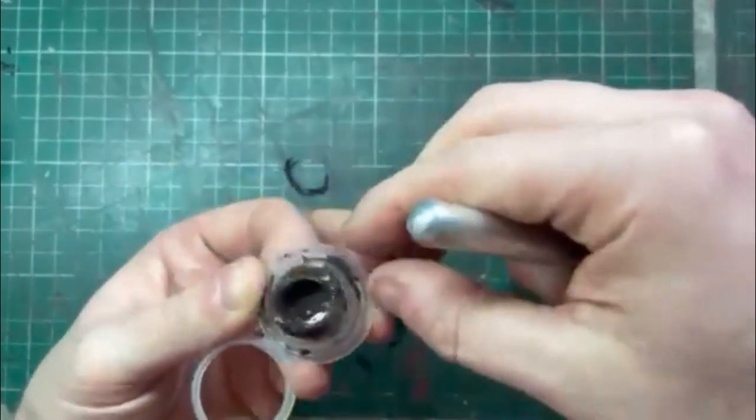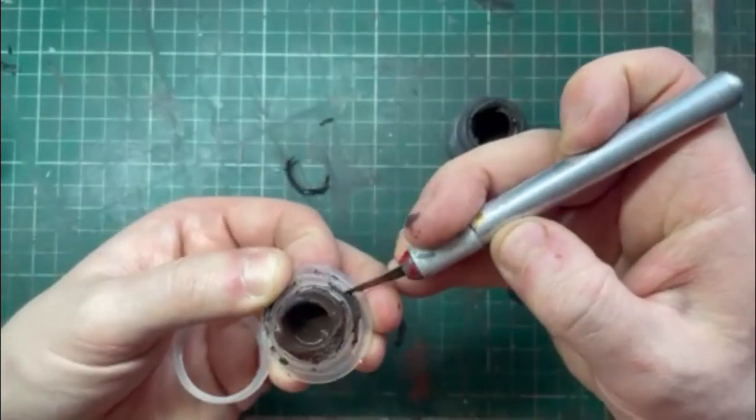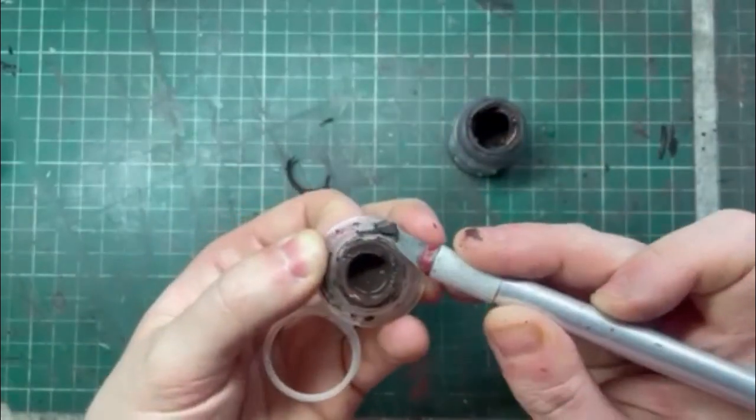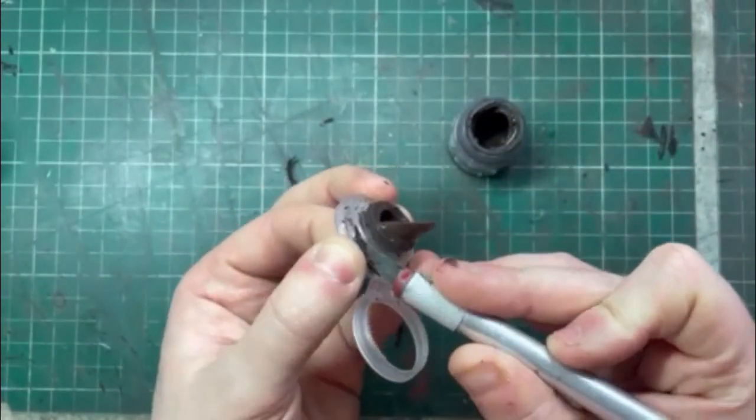Once it looks clear, pick off any little bits that might be stopping the pop lid from shutting. This just happens over time, it's something that can't be avoided, it just happens.